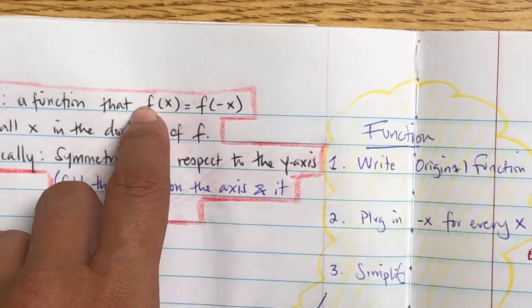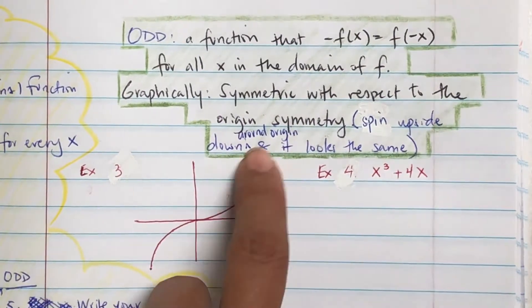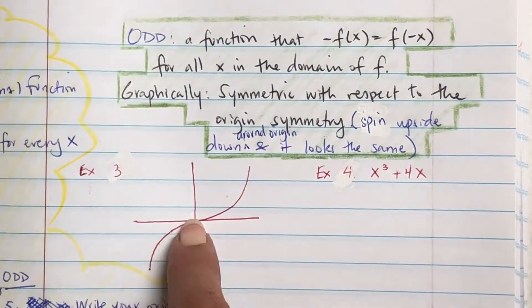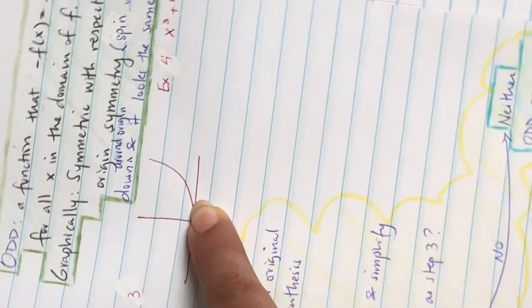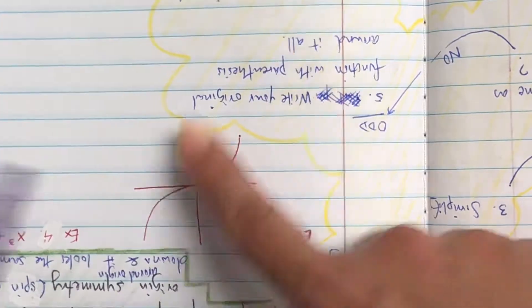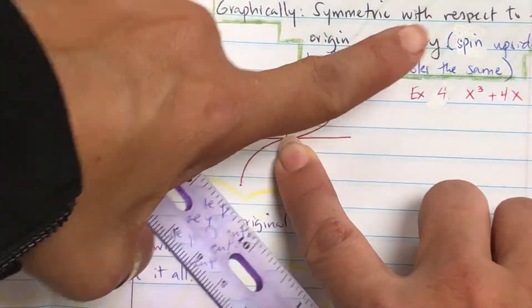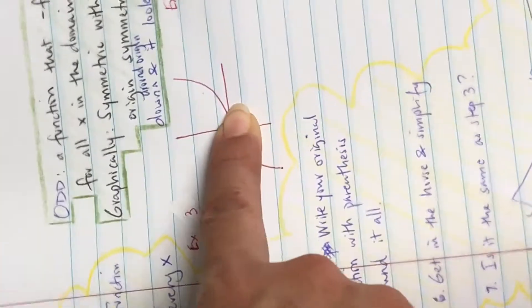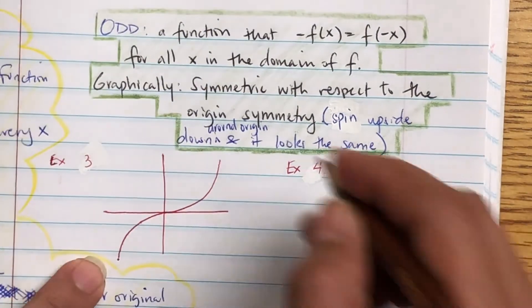Odd says that negative f(x) is equal to f(-x). Graphically, it's symmetric with respect to the origin — meaning when you spin it, it's going to look the same. Let's spin it — yes, it looks the same, so that is odd. Again, when I spin it, it looks the same, so that's an odd function.